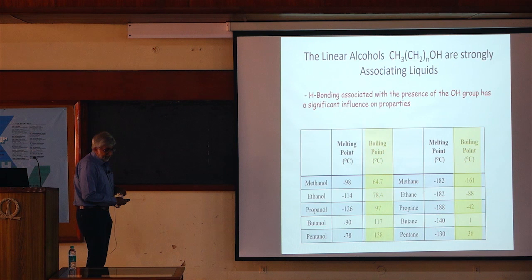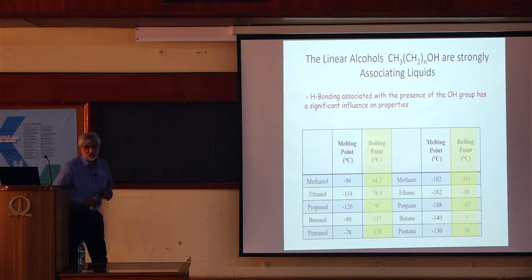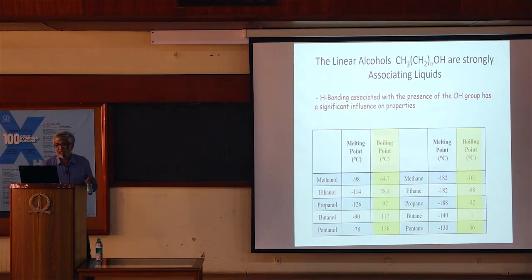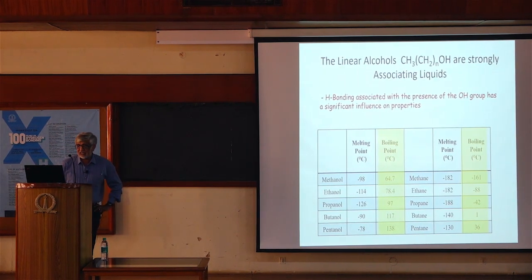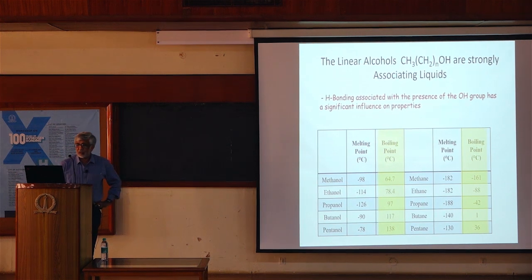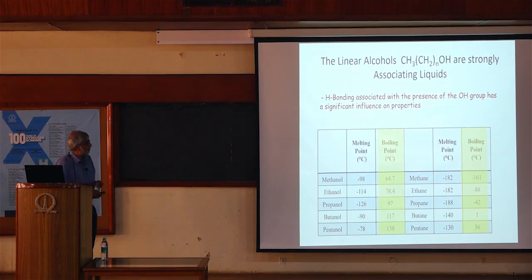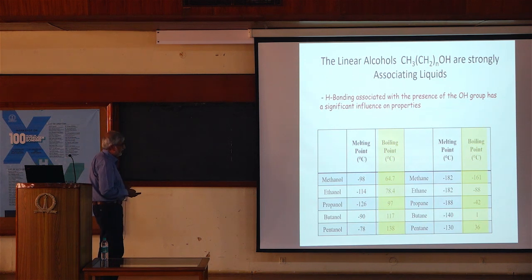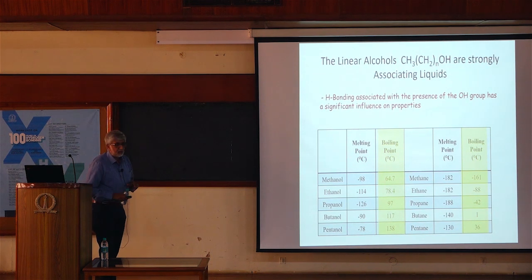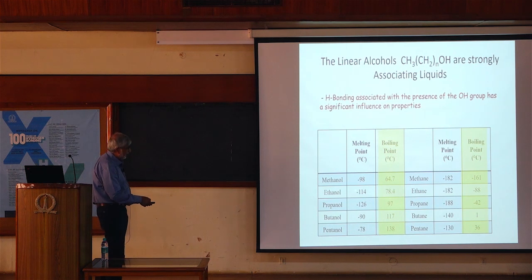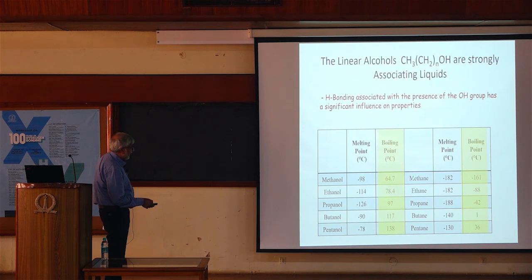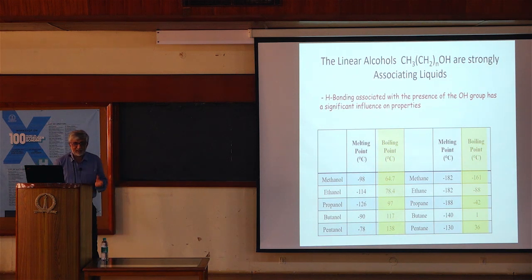Why linear alcohols? These are very strongly associating liquids, and this has generally been attributed to the presence of hydroxyl groups, which have a very significant influence on properties. This can be seen by comparing the properties of the alcohol with the corresponding alkanes — for example, the melting point or boiling point — where there is a big difference attributed to the presence of the hydroxyl group.